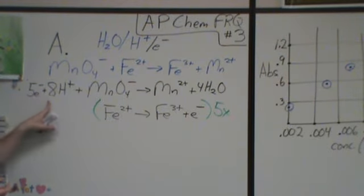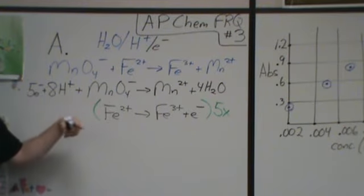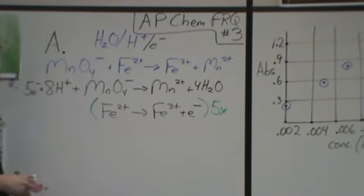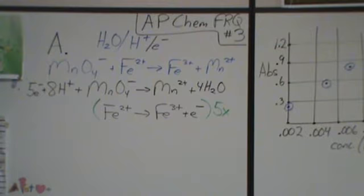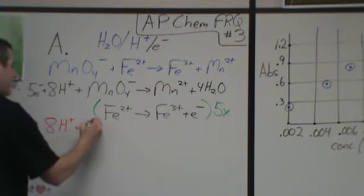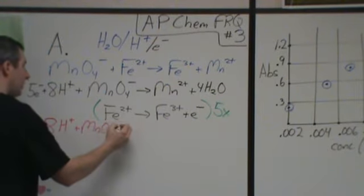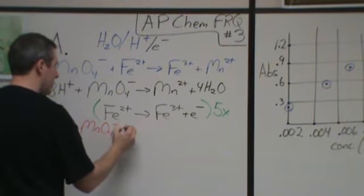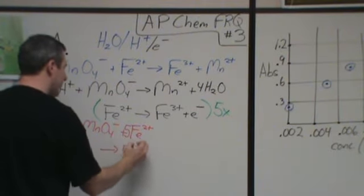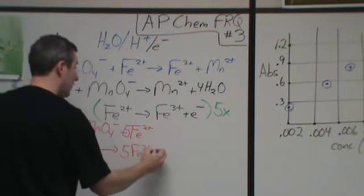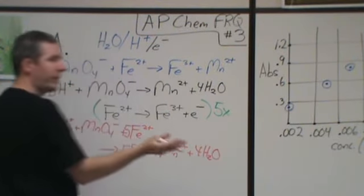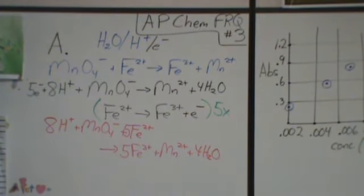I'm taking five electrons to react with eight H+ and a permanganate to turn it into Mn2+ for waters. And those five electrons are coming from the iron 2+ becoming the iron 3+. The last thing I need to do here is just recombine everything. So I'm going to take my eight H+ plus my permanganate plus my five iron 2+. And then that will turn into five iron 3+, a manganese 2+ ion, and four water molecules.